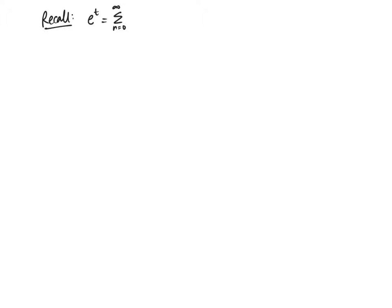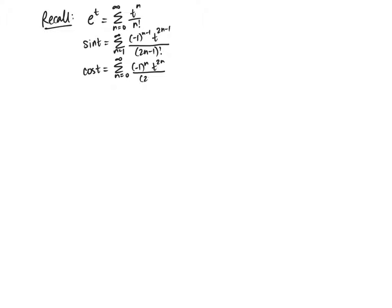The Maclaurin series for e to the t is the sum from n equals 0 to infinity of t to the n over n factorial. The Maclaurin series for sine t is the sum from n equals 1 to infinity of negative 1 to the n minus 1, times t to the 2n minus 1 over (2n minus 1) factorial. And the Maclaurin series for cosine t is the sum from n equals 0 to infinity of negative 1 to the n, times t to the 2n over (2n) factorial.